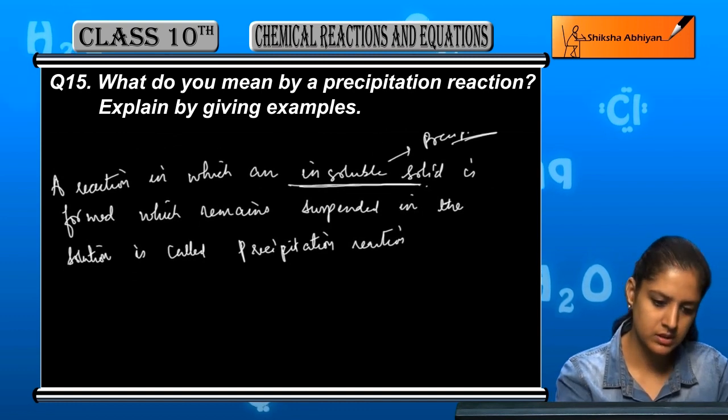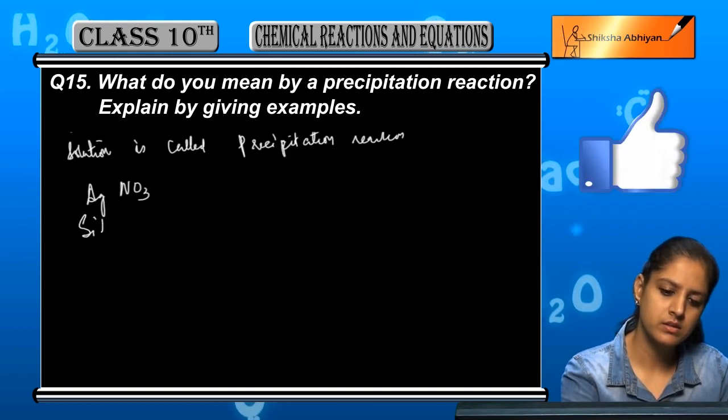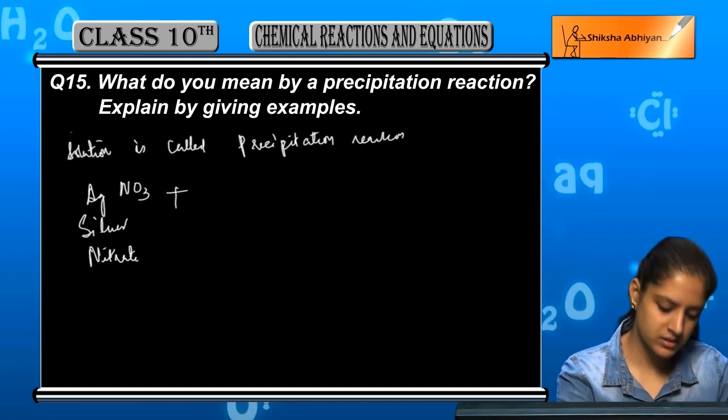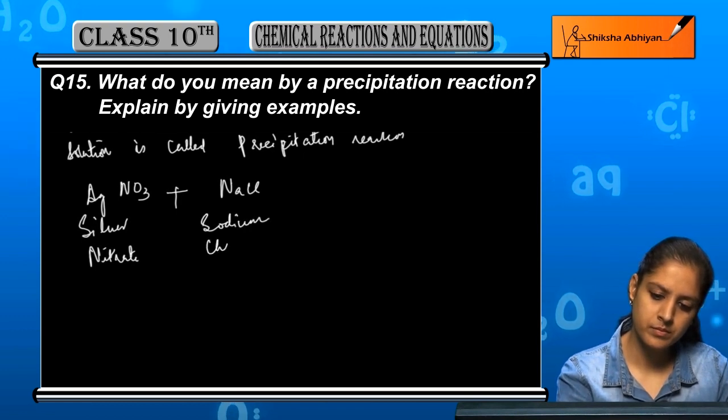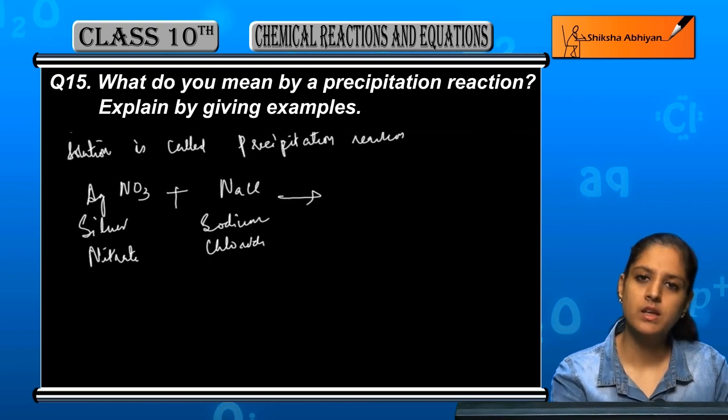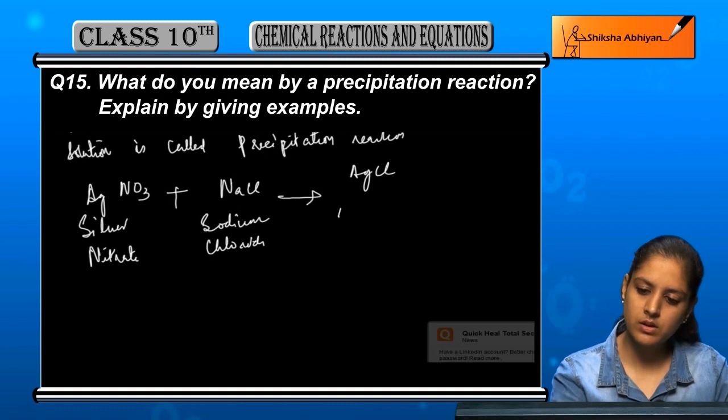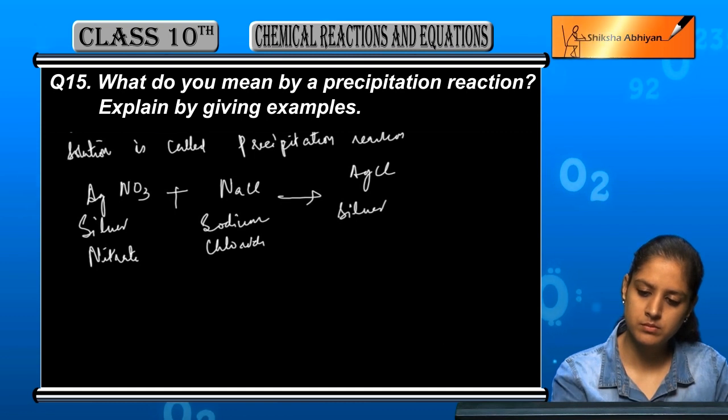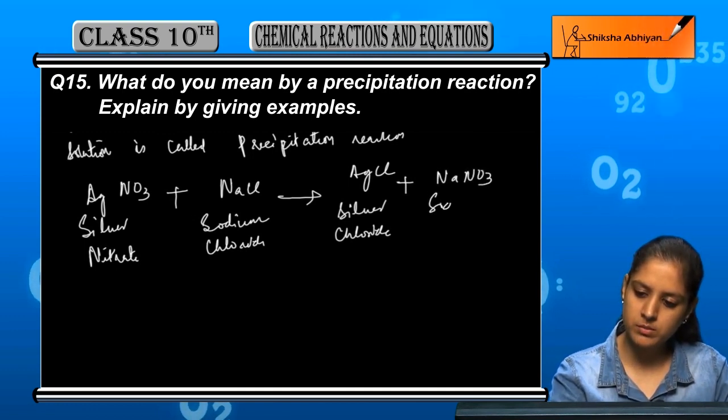Now an example is AgNO3, that is silver nitrate, plus NaCl. After the reaction, it is giving silver chloride plus sodium nitrate.